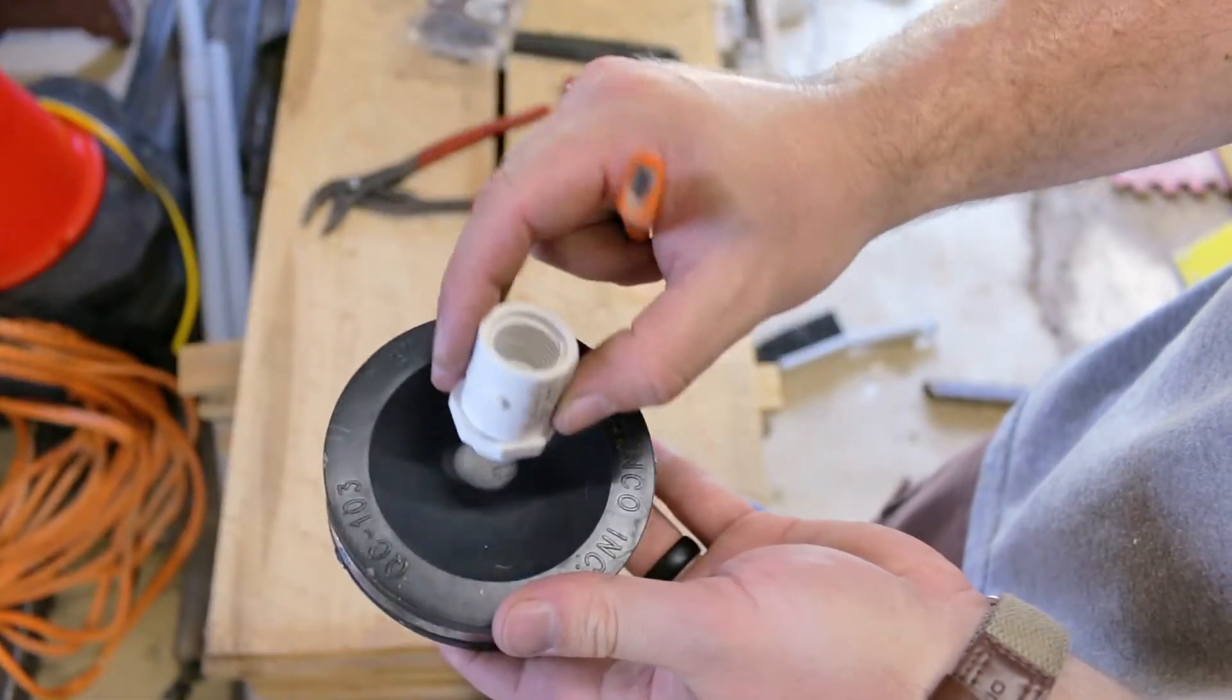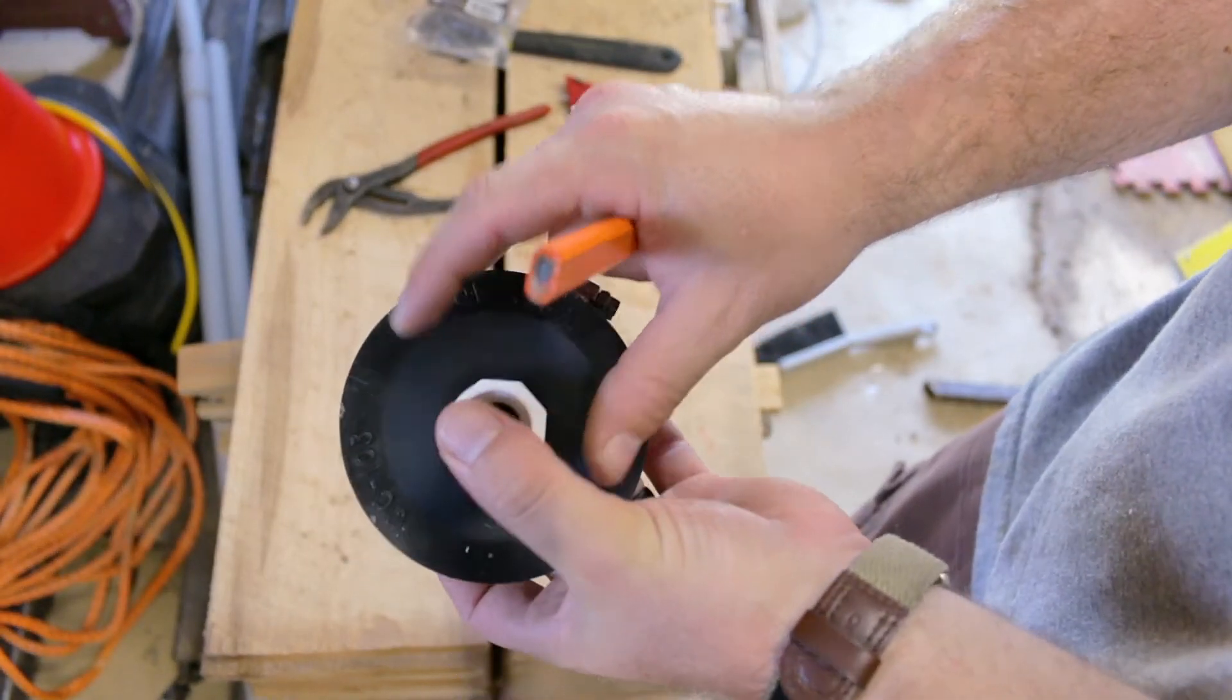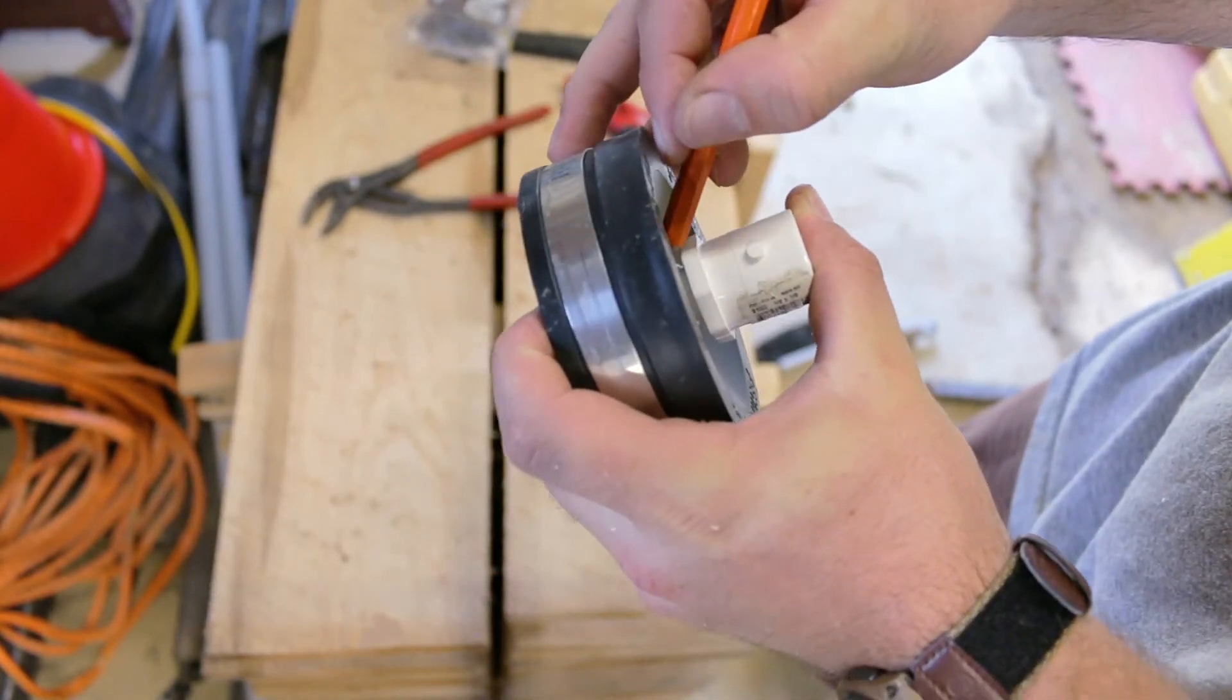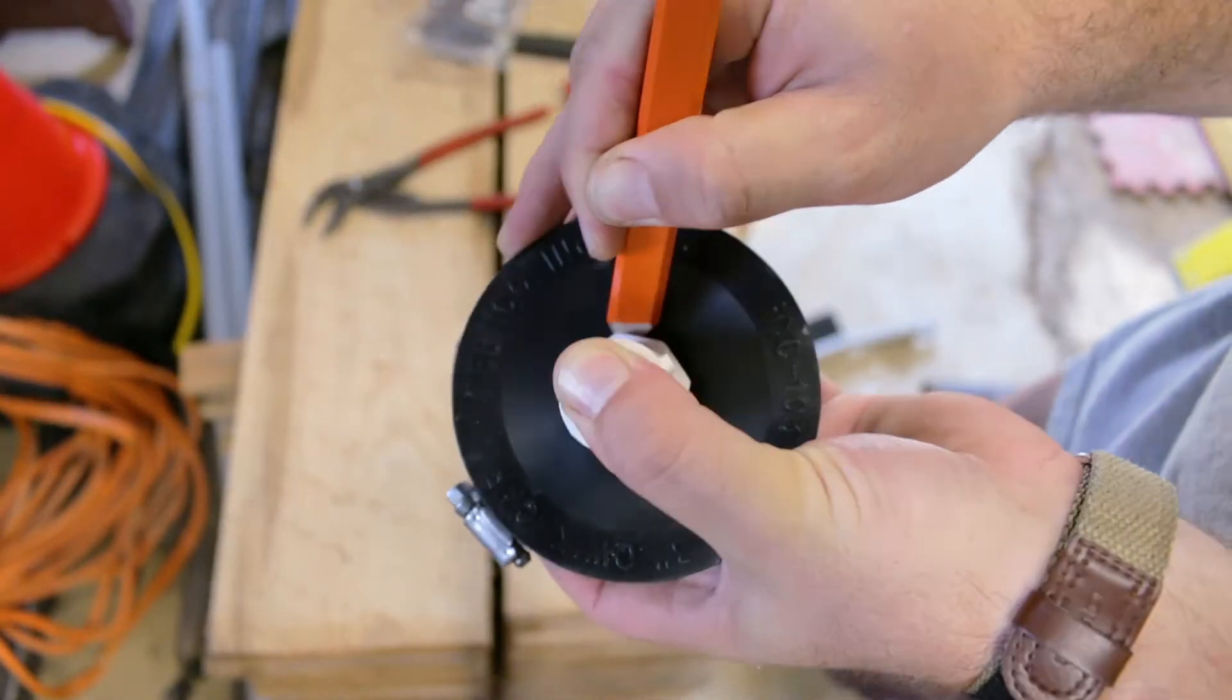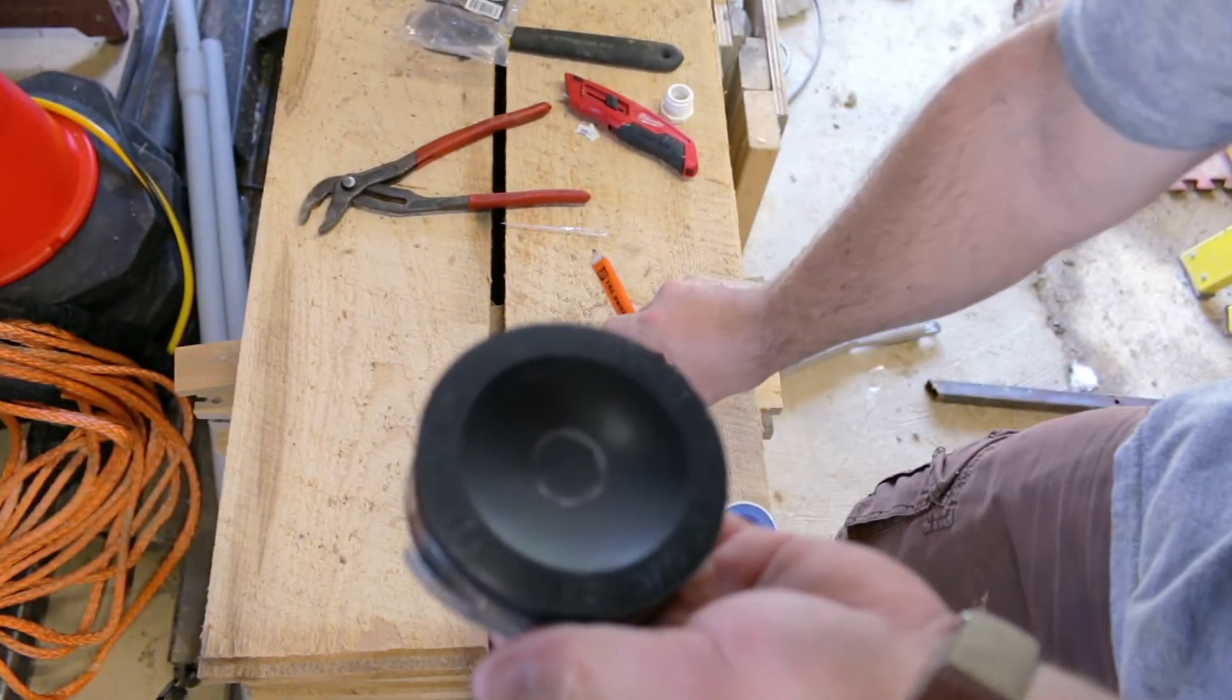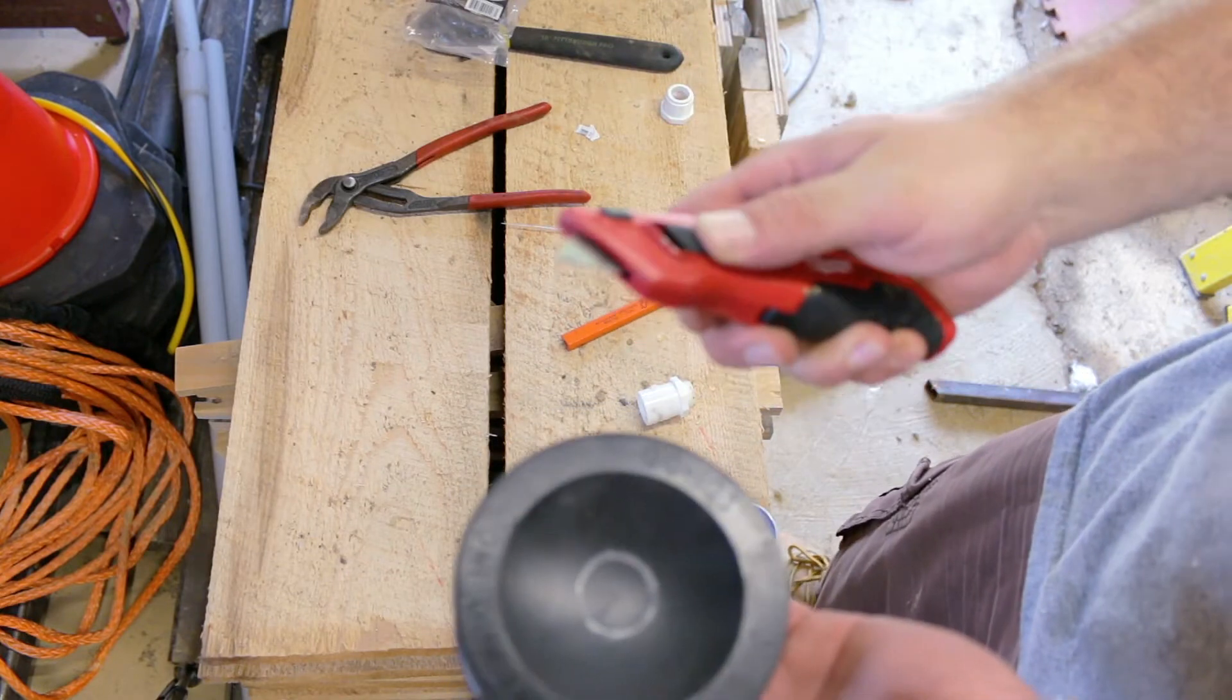With this shortened, what we're going to do now is just place this in the center and then we're just going to trace around the threads on the inside here with a pencil. That will show up on this rubber. Okay so there we got our hole. All we need to do is just cut this out and we're going to use a utility knife to do that.